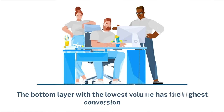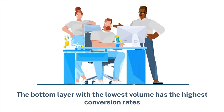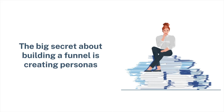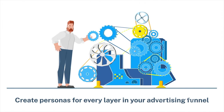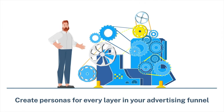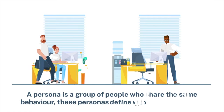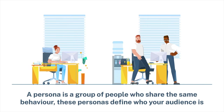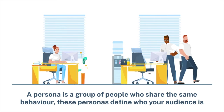The bottom layer with the lowest volume has the highest conversion rates. That same group also carries the highest value, or return on ad spend (ROAS) as we call it. The big secret about building a funnel is creating personas. Personas are the building blocks of your funnel — create personas for every layer in your advertising funnel. A persona is a group of people who share the same behavior, and these personas define who your audience is.